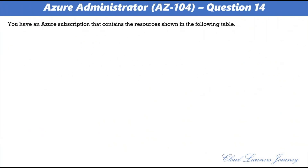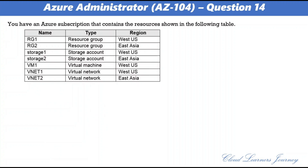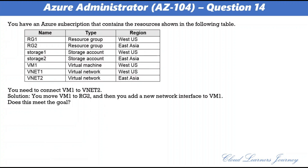Question 14. Same resources as the previous question, but the solution is different. The proposed solution is: move VM1 to RG2 and then add a new network interface to VM1. The correct answer is B. No. Moving VM1 does not resolve the issue. As discussed, you must first delete VM1, then recreate VM1, and then add the network interface for VM1.